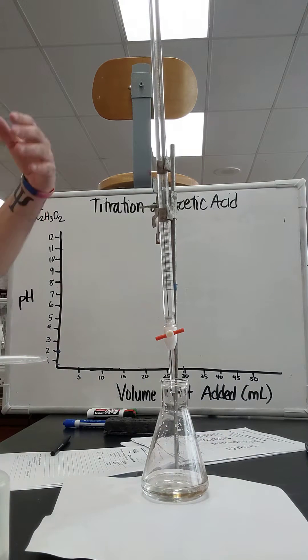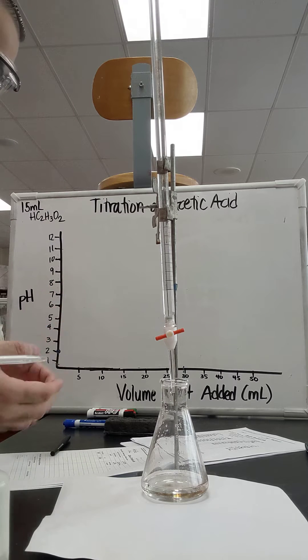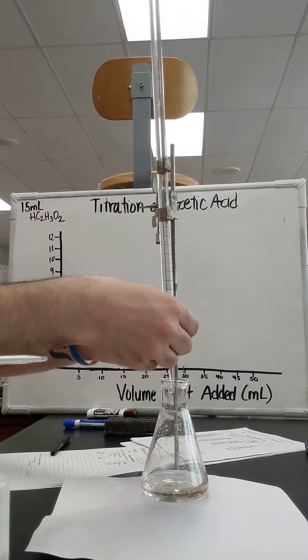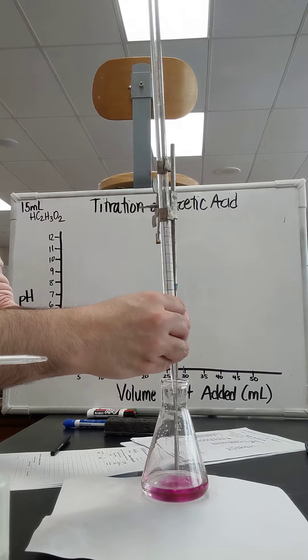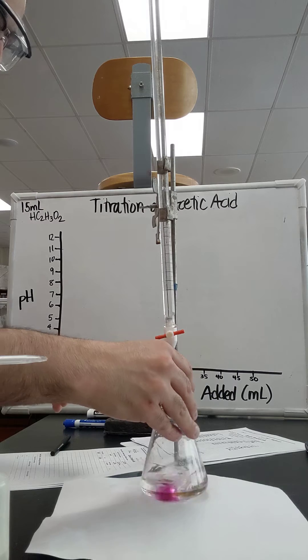And now I'm going to drop a couple milliliters of the sodium hydroxide and record changes in pH. I'm going to do two at a time. So I got 2 milliliters. Swirl, swirl, swirl.